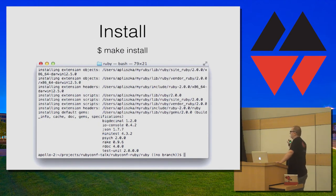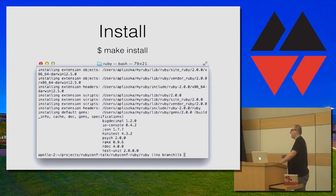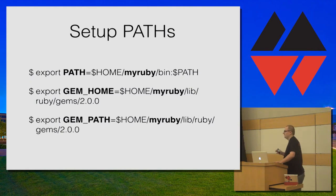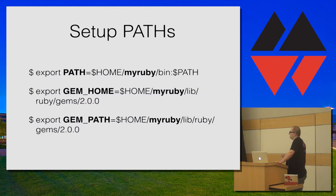After you check your Ruby build is green, it's time to install it. You install it by running make install. This will take all the binaries and put them — you can see it here, it's copying to my Ruby folder. It will also create the gem folder structure and install the basic gems like psych, rake, etc. At this point Ruby is installed, but you still have to inform the system where the binaries are. You set up the path to point to my Ruby bin folder and set up GEM_HOME and GEM_PATH to also point to my Ruby folder.